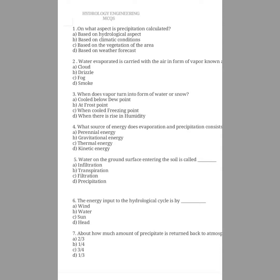The second question is: what evaporated water is carried with the air in the form of vapour? The options are cloud, diesel, fog, smoke. The answer is cloud, because it is the form which deals with the rainfall. Water is evaporated from plants, rivers, and oceans and is carried with the air in the form of vapour, which is known as cloud. Clouds come in very different shapes and sizes and they move according to winds.